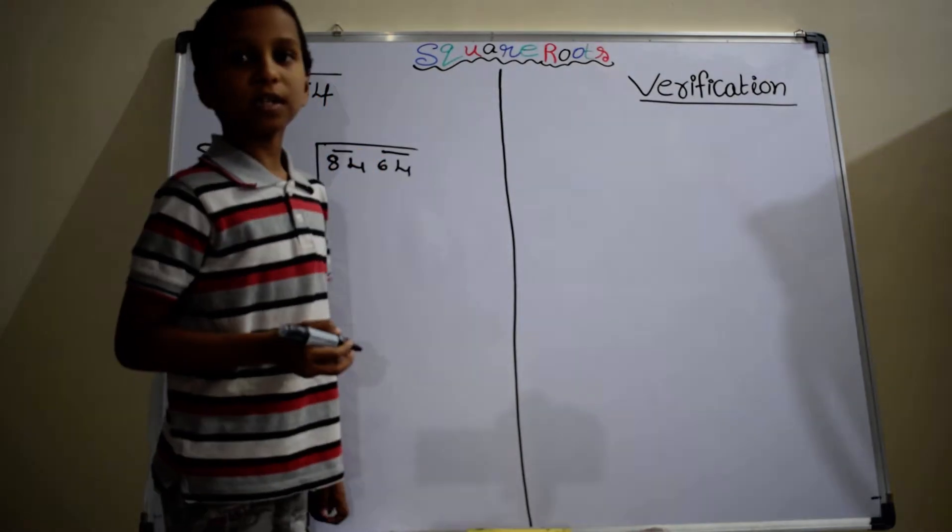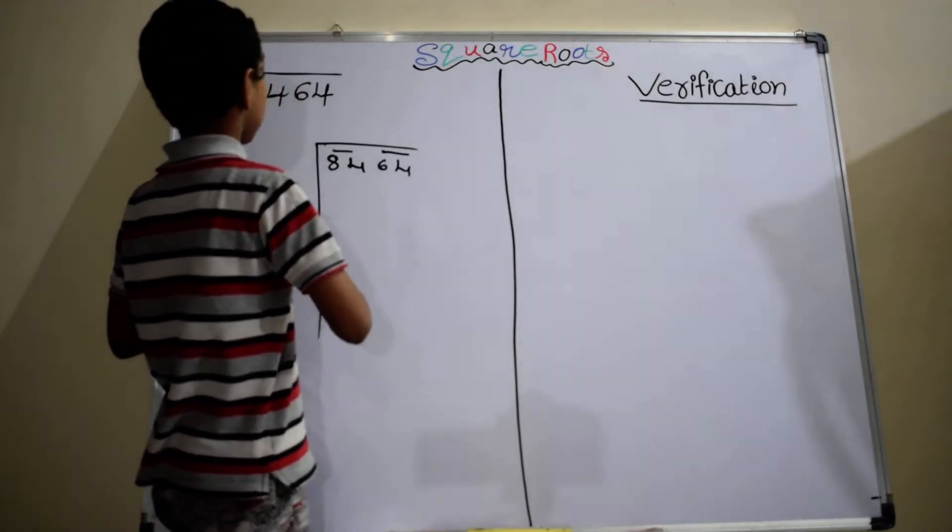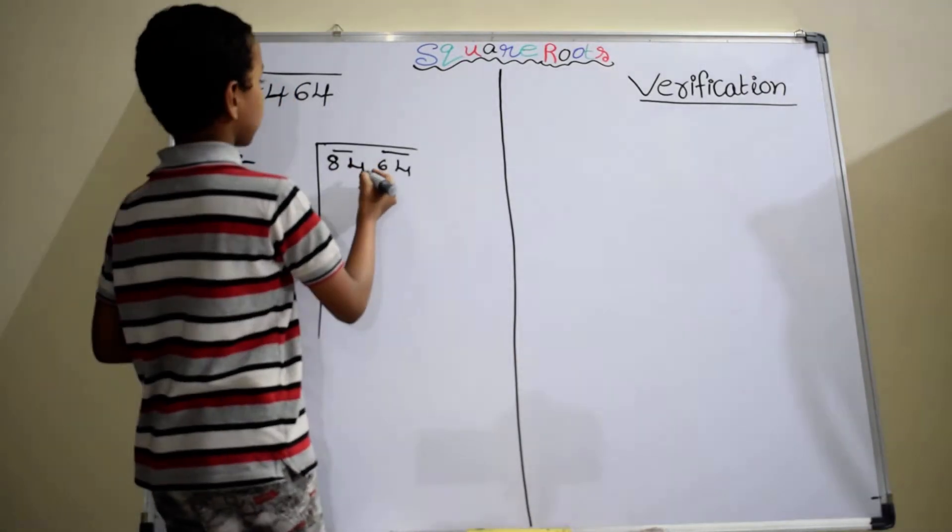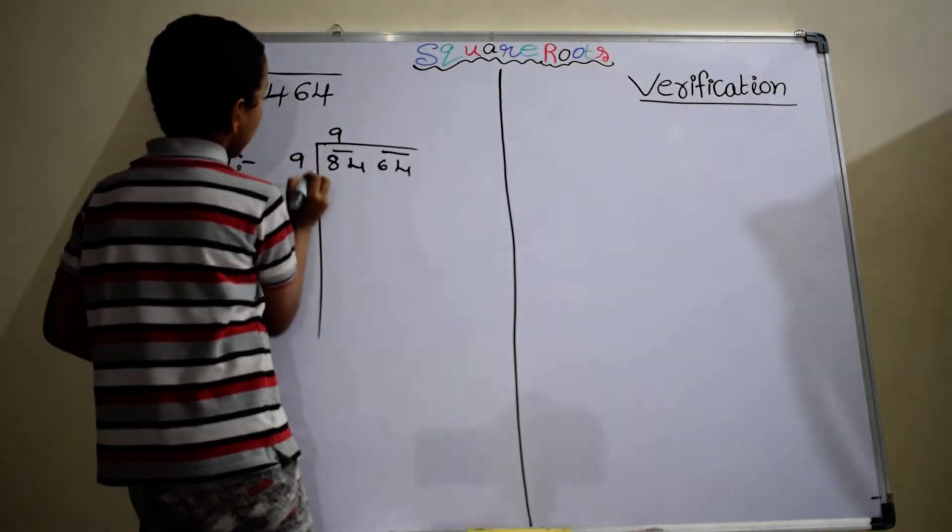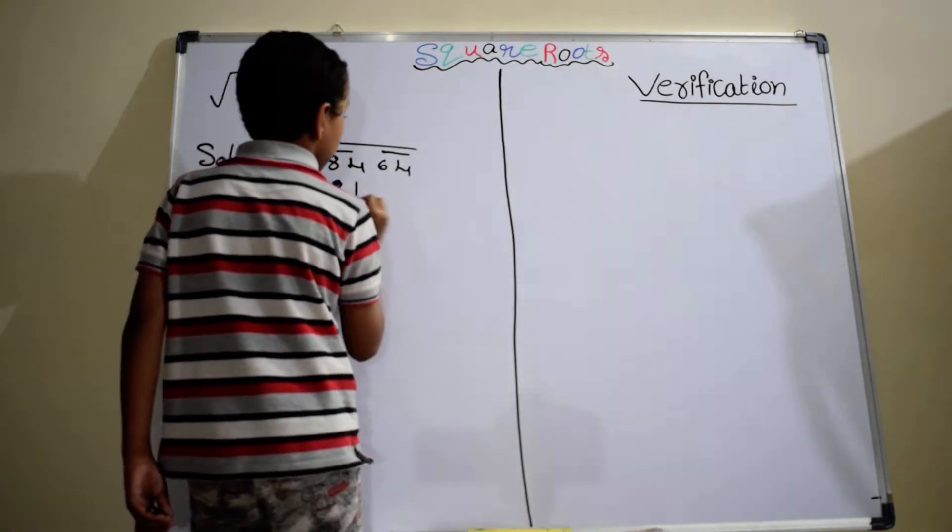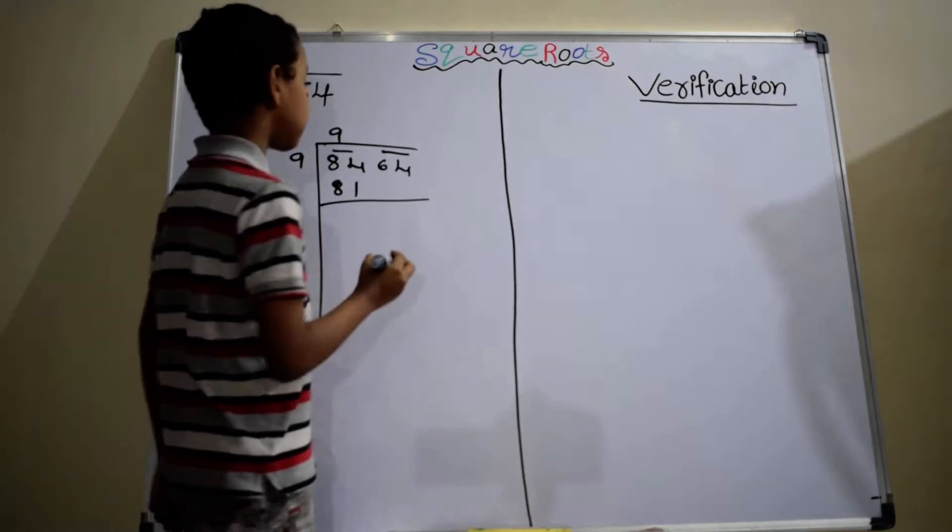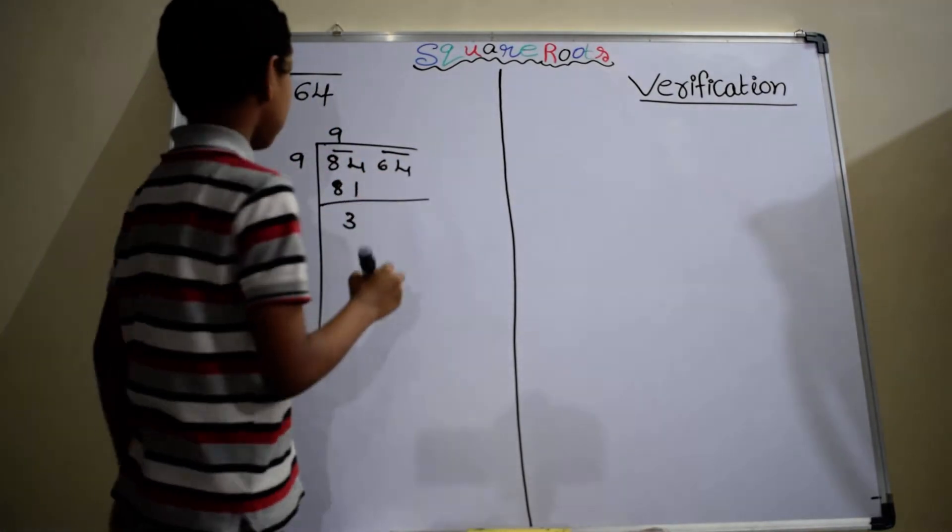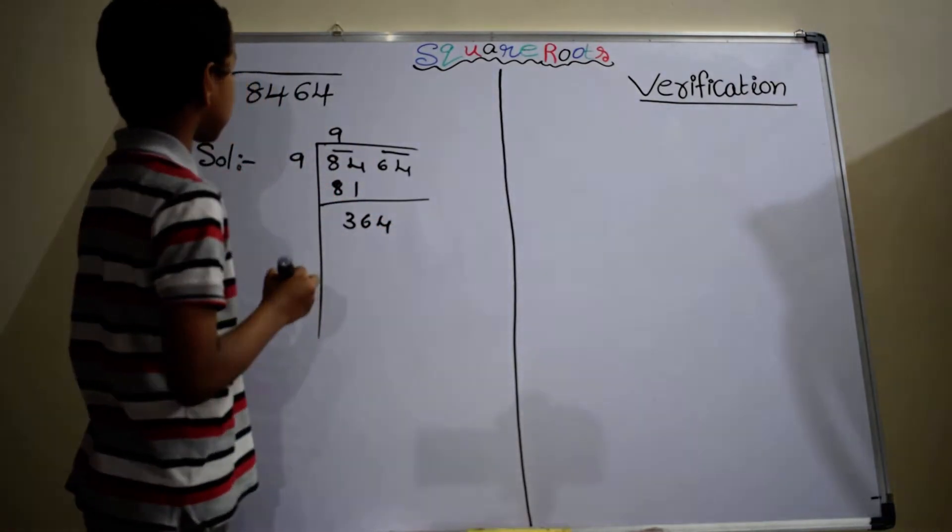In this step, we have to take square of any number nearby 84, that is 9. 9 square is 81. 84 minus 81 equals to 3. Bring down second pair, which is equal to 364.